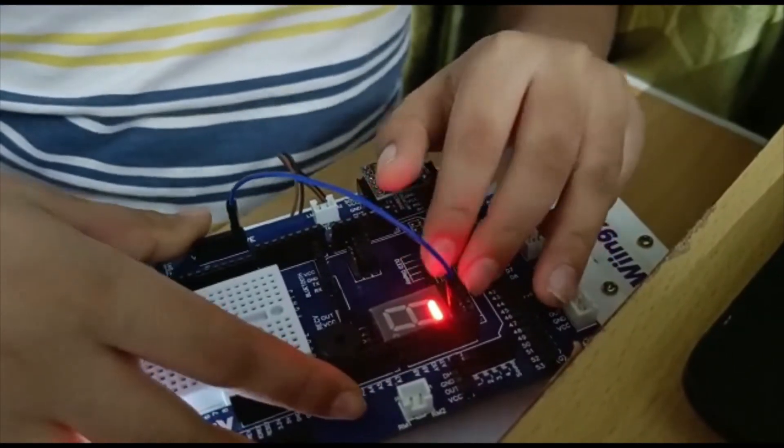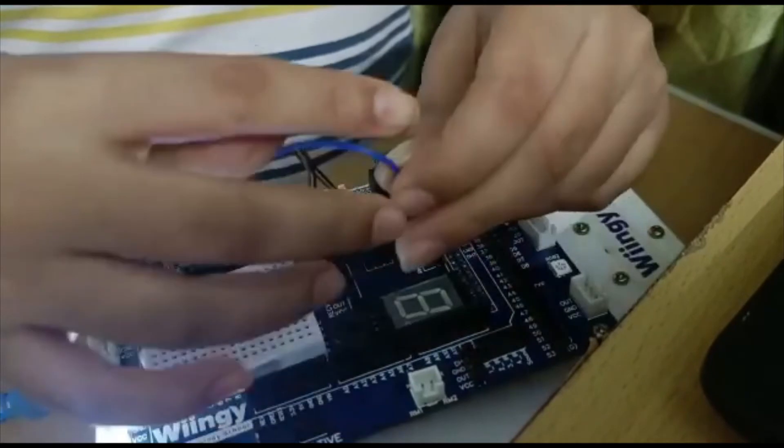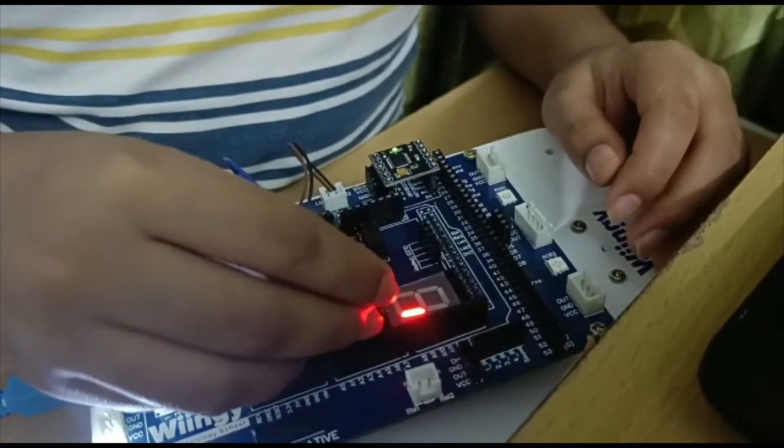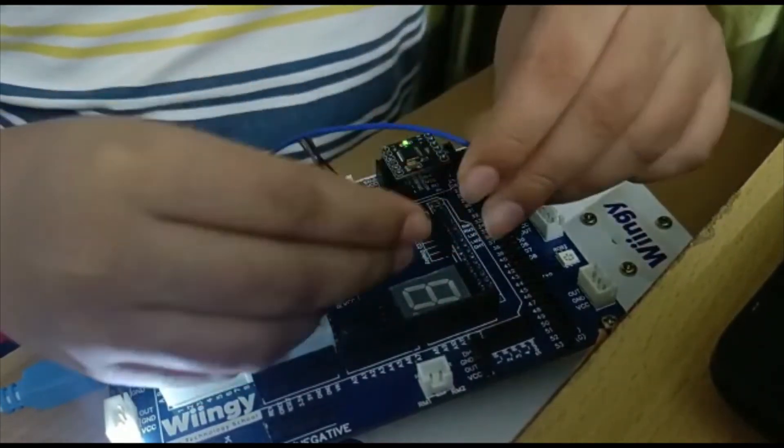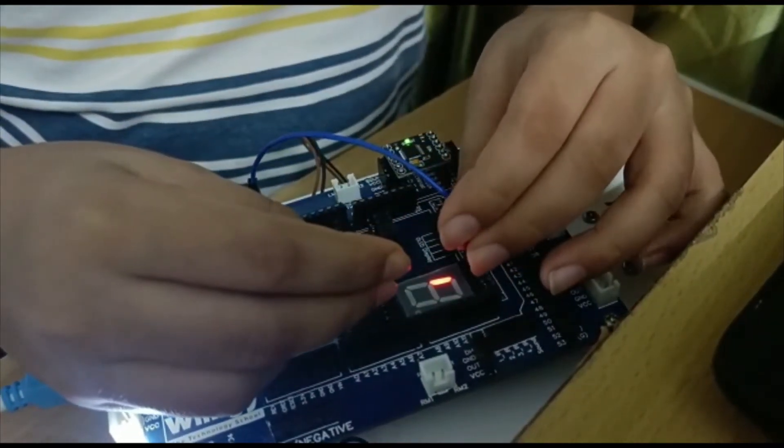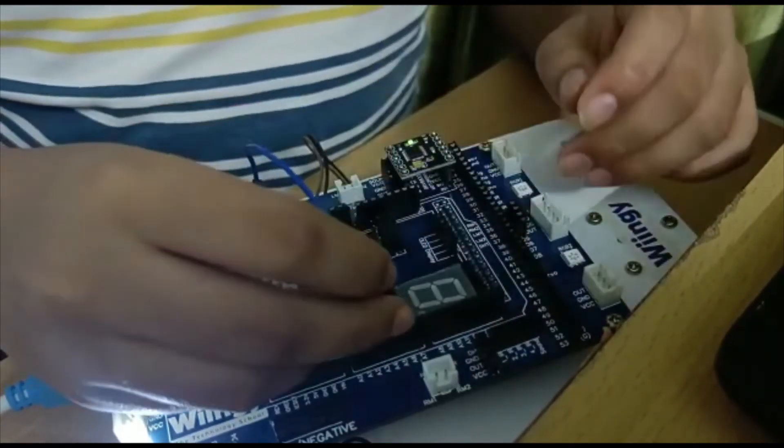If we put it in B, then this part will turn on. For C, D, E, F, G, and DP.